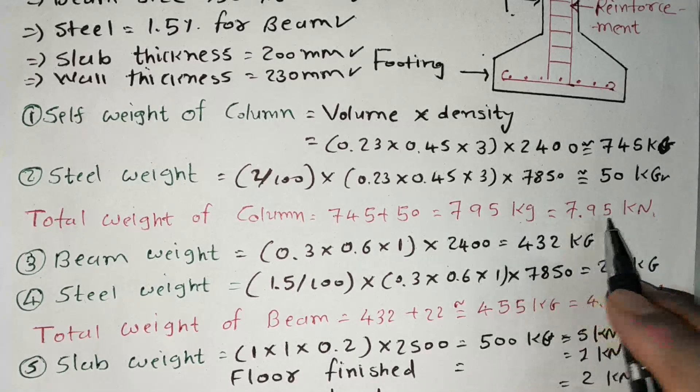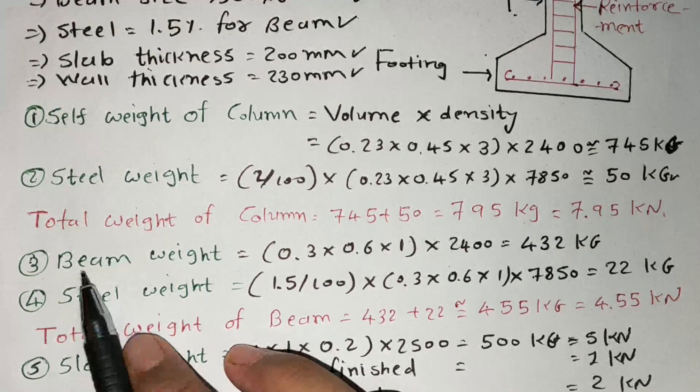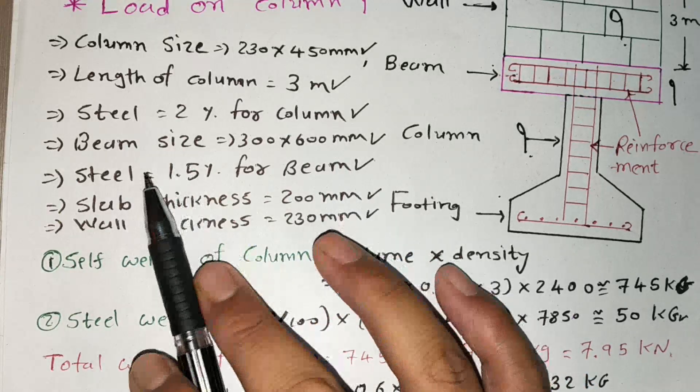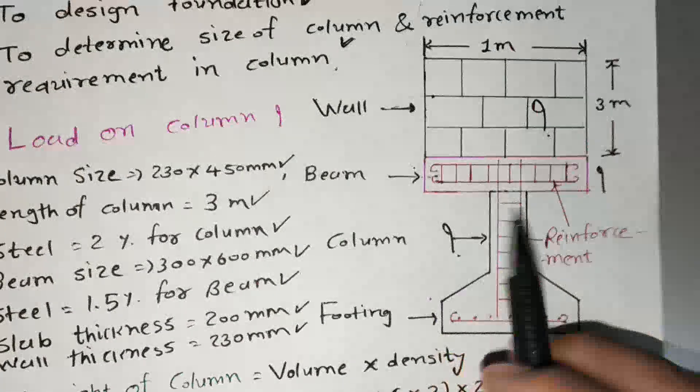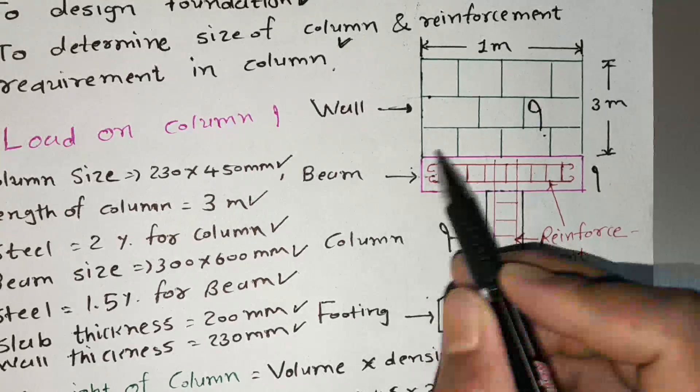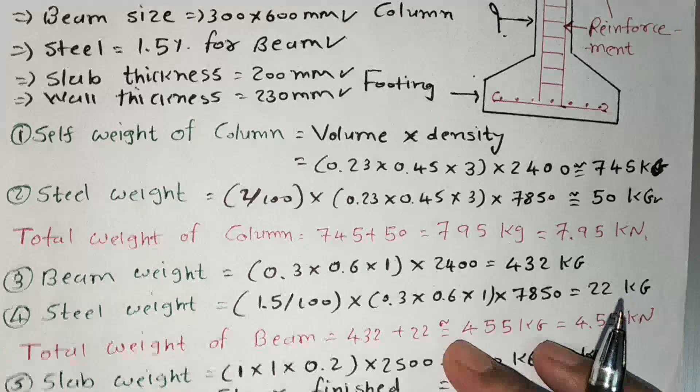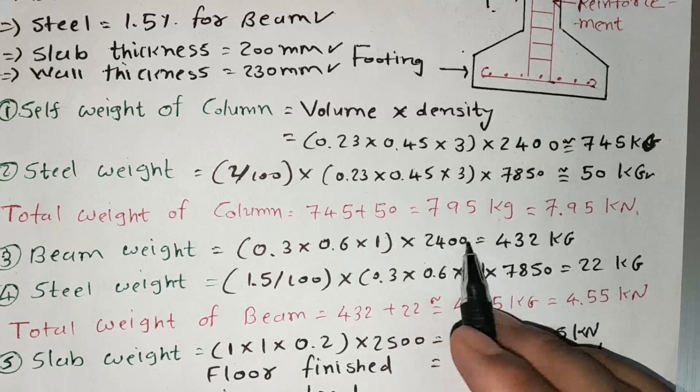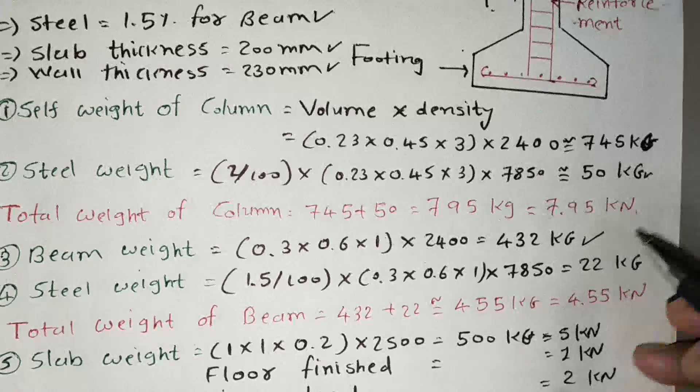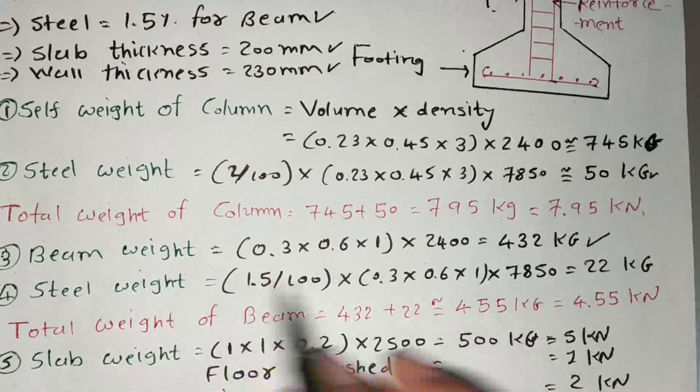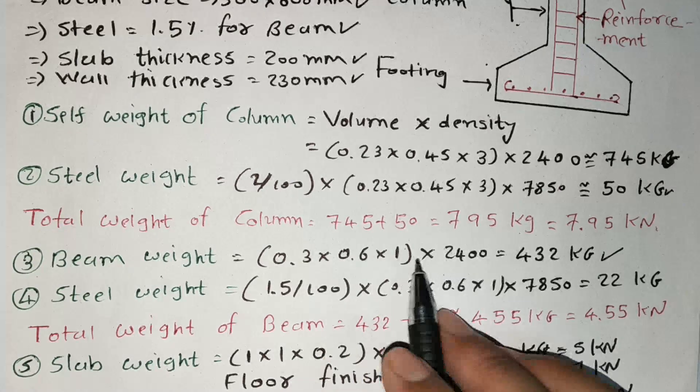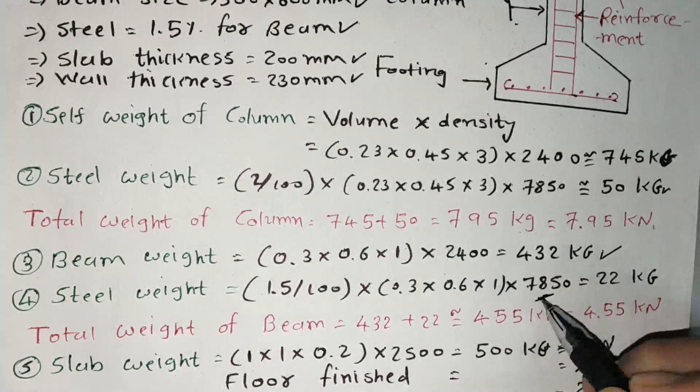Then second beam weight, here is the beam dimension 300 x 600 and the beam weight steel is 1.5 percentage. So here for the beam weight 0.3 x 0.6 and here we assume 1 meter unit length of the beam. So 0.3 x 0.6 x 1 meter and the density of the concrete is 2400 kg per meter cube. So I got 432 kg. So the steel weight in beam, this is 1.5 percentage steel, same way volume is 0.3 x 0.6 x 1 and the density of the steel is 7850.